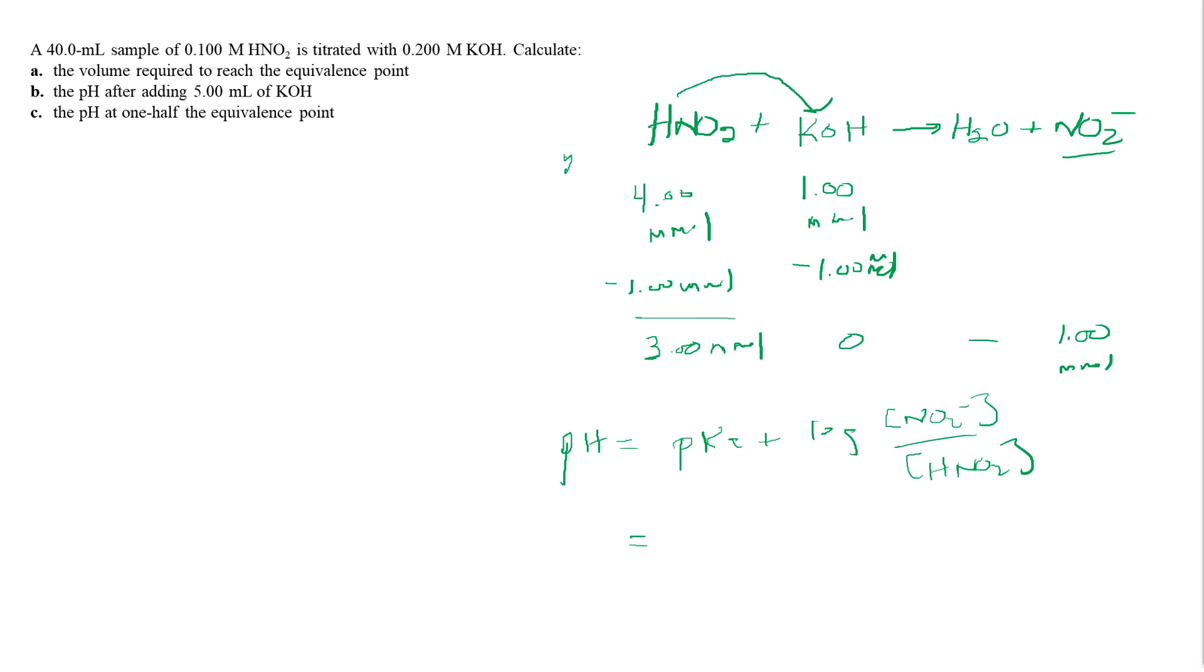Alright, and so the Ka for nitrous acid is 4.6 times 10 to the negative fourth. You have to look that up in the table in chapter 16. So we're going to have the negative log of 4.6 times 10 to the negative 4, and then we're going to say plus the log of 1 divided by 3. We can do that because this is millimoles and that's millimoles. So let's get the calculator. We get negative log of 4.6 exponential negative 4 plus the log of 1 divided by 3, we hit enter, and we get 2.86.